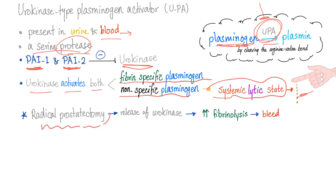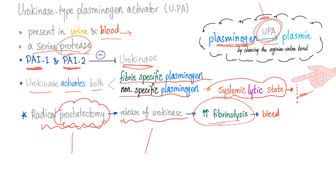Radical prostatectomy — surgical removal of the prostate gland — releases urokinase. Remember, urokinase is related to the urine, and the prostate is very close. This increases fibrinolysis because you have lots of UPA. That UPA activates plasminogen into plasmin, plasmin increases fibrinolysis, and you will bleed.